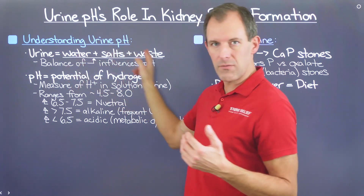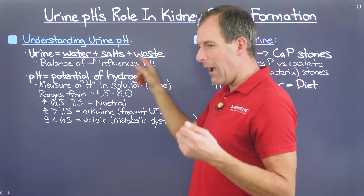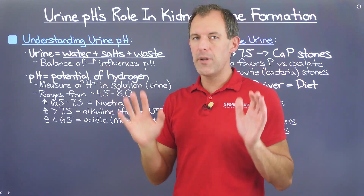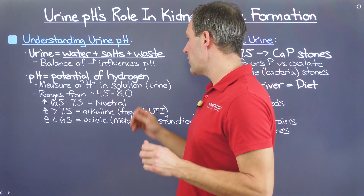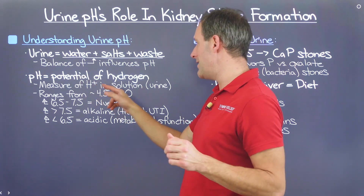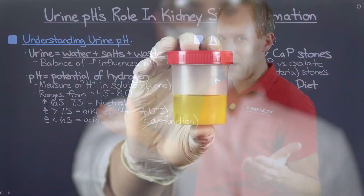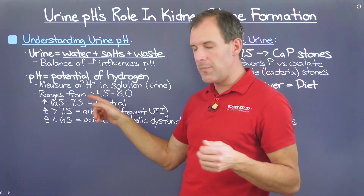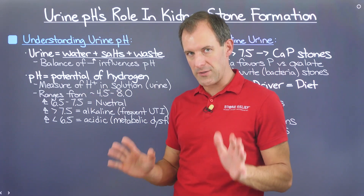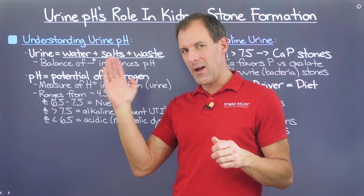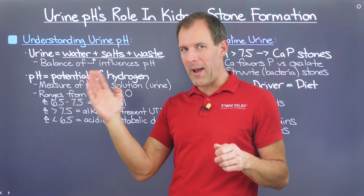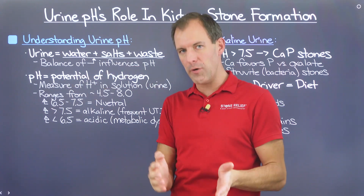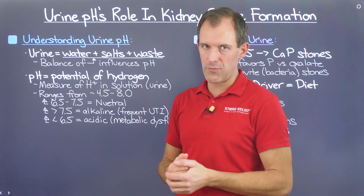The balance of these three things is where we have the ability to influence pH. pH really is just the potential of hydrogen — the measure of hydrogen ions in a solution, or in our urine in this example. For urine purposes, the range can be between 4.5 on the acidic end to about 8 on the upper limit of alkaline.